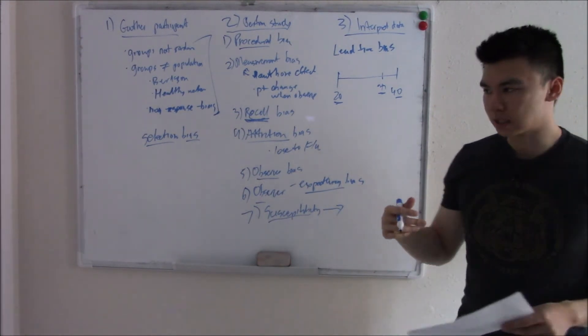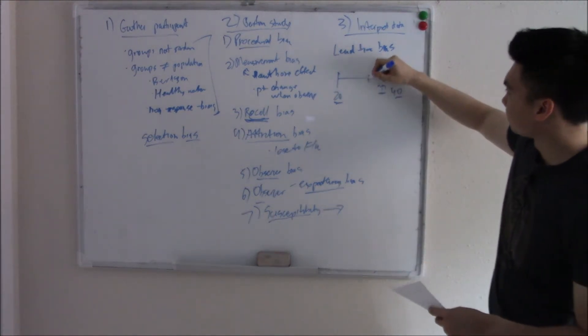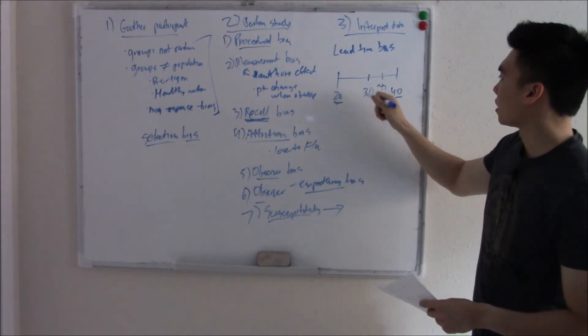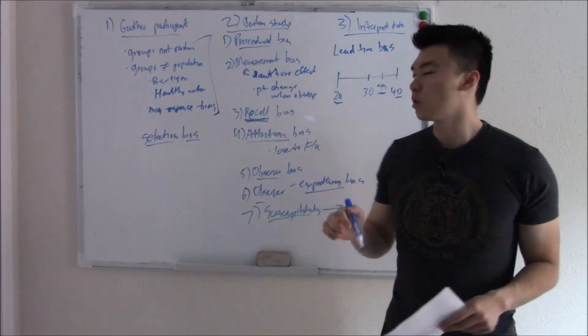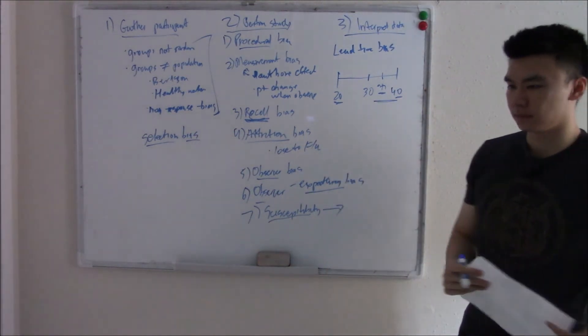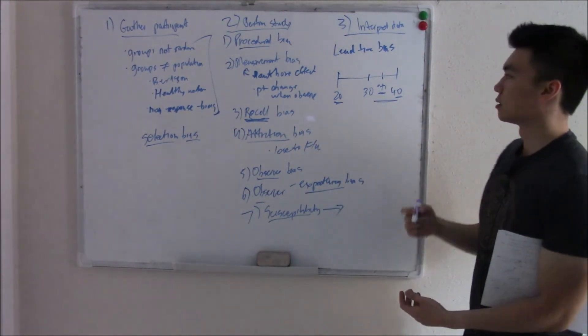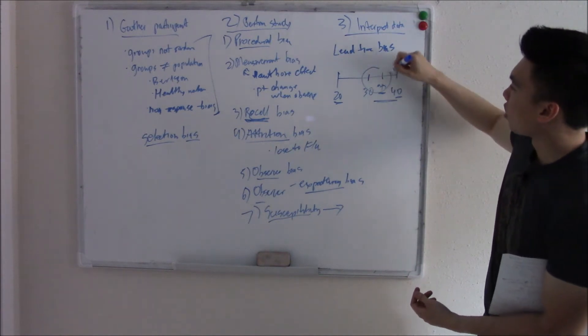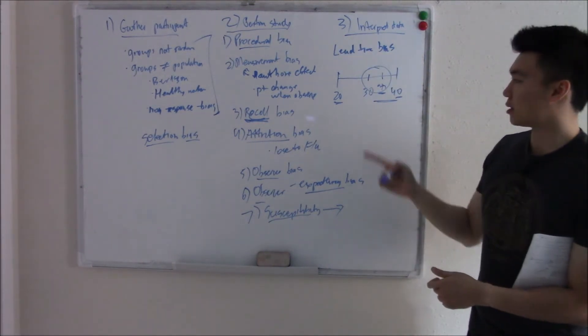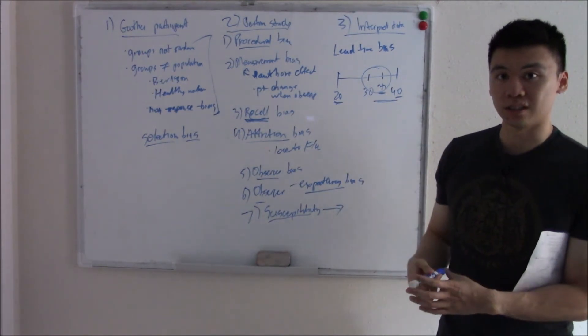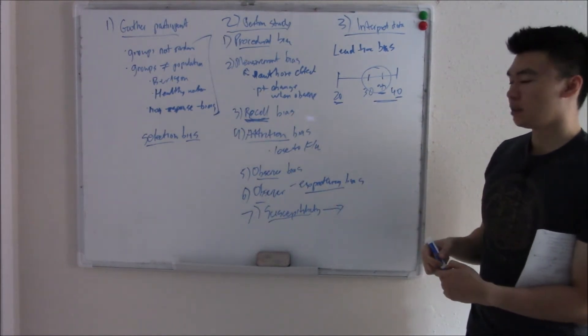And then another researcher comes along and says, I made a more sensitive test. Picks it up when they're 30. They say, you're wrong. When we pick it up, patients die within 10 years. Can you see what the problem is? They can only see a part of the picture. They think, hey, we picked it up when they're 30. We are increasing survivability by five years.